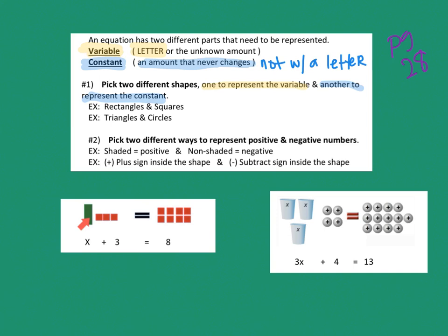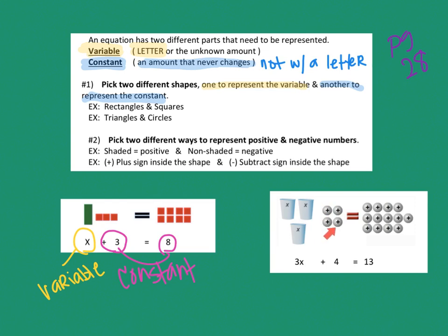Here are two different examples. In the first one, we have a rectangle and a square. The rectangle represents the variable, and the squares represent the constant numbers — numbers without a letter. In the second example, they chose different shapes: cups and circles or ping pong balls. Again, identifying which represents what — the 3x is the variable.